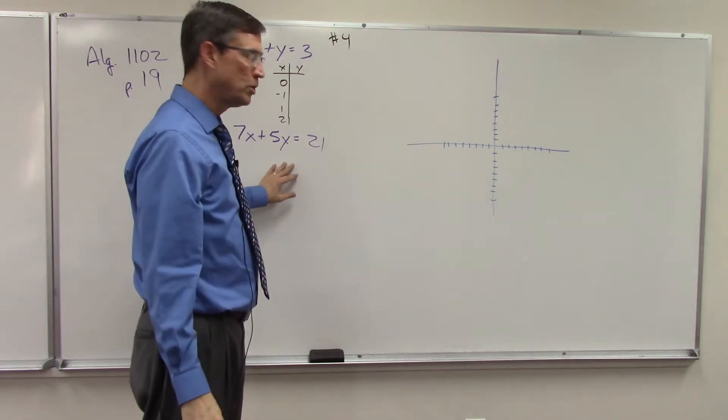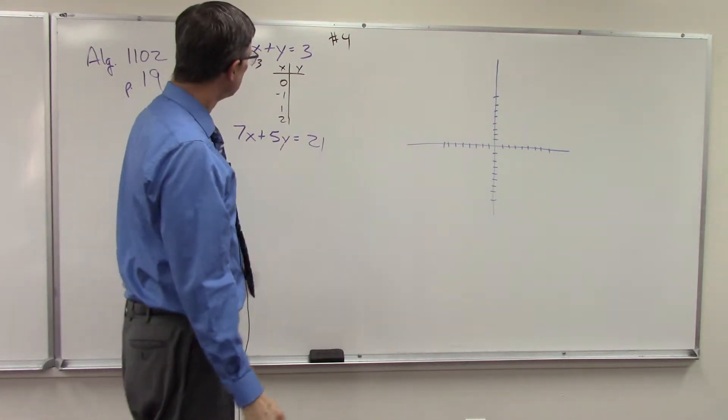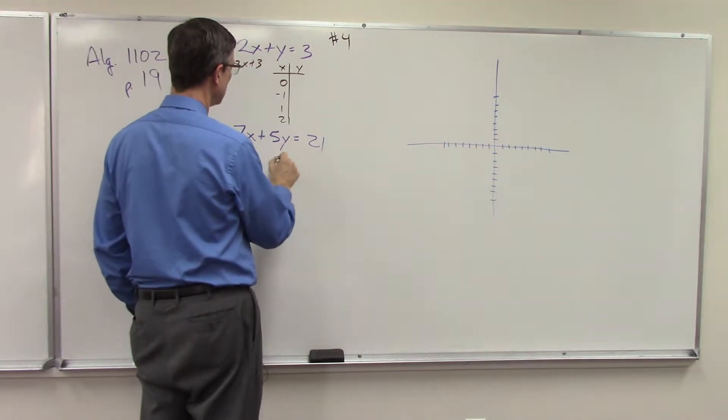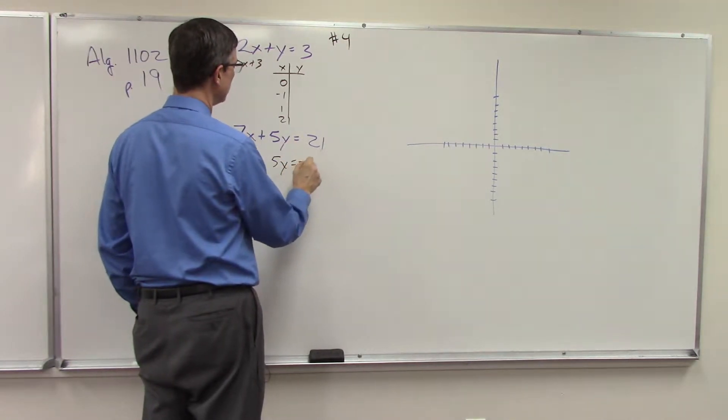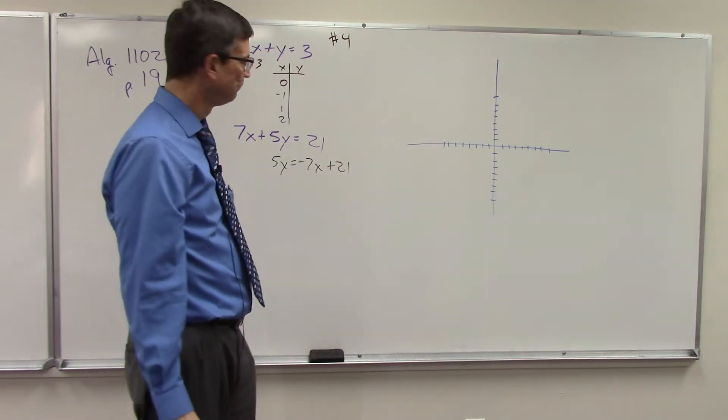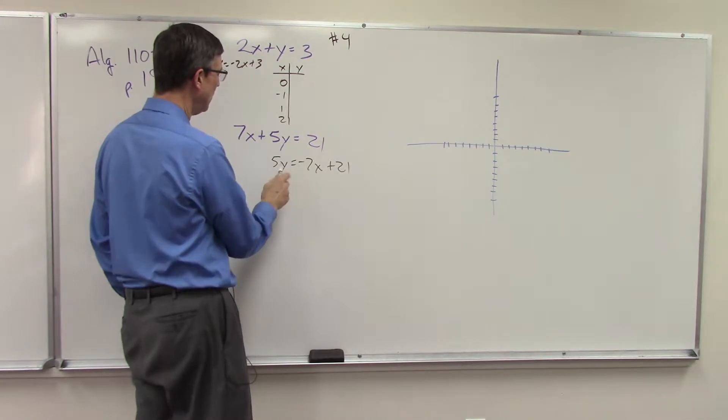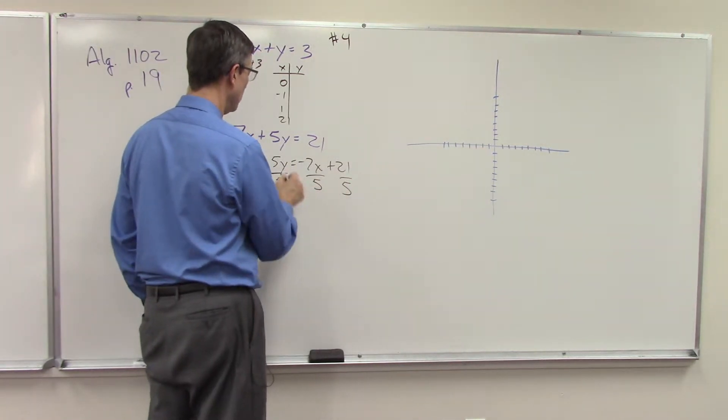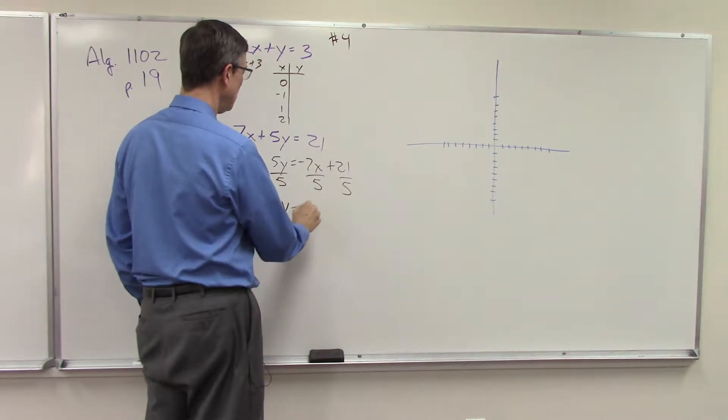This was the one that was tricky. I'm going to start off the same way again. We're going to solve for y. So subtract 7x from both sides. 5y equals negative 7x plus 21. But then we need to divide by 5 in order to solve for y.